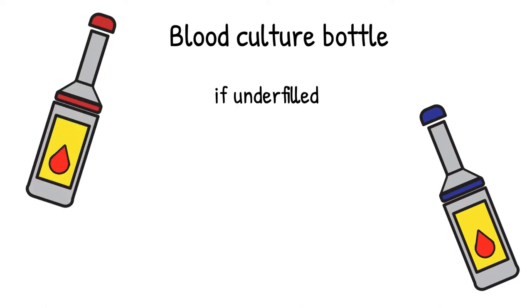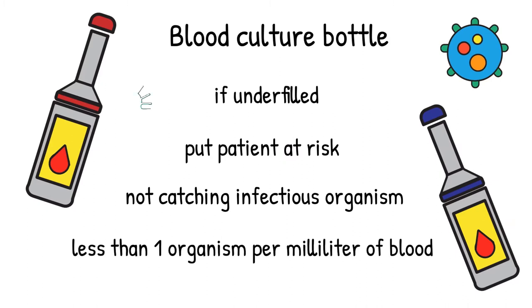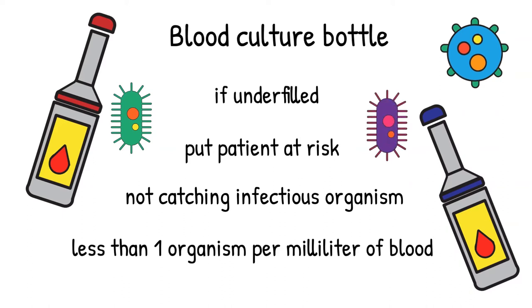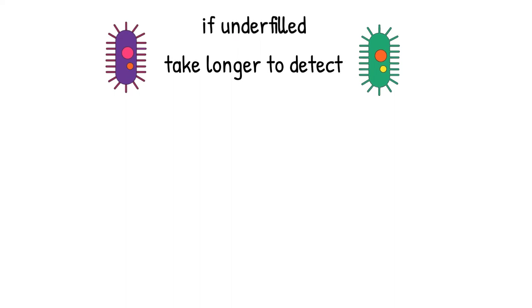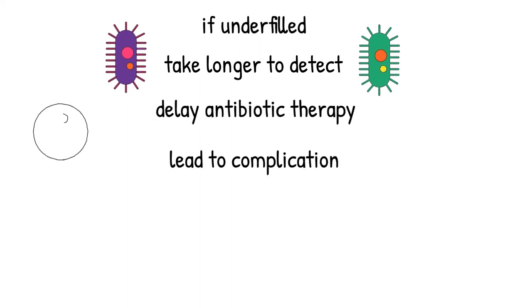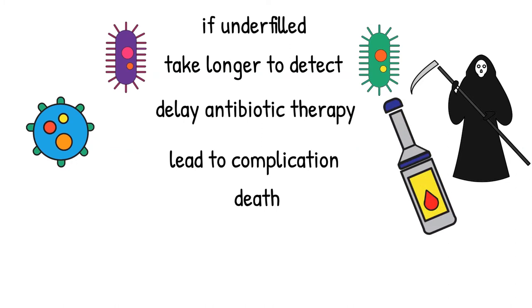When the blood culture is underfilled, you are putting the patient at risk because of not having a good enough sample. The organism that causes septicemia can be detected as low as one organism per milliliter of blood. But if you did not collect enough blood, you may miss the organism, especially at the beginning of the infection phase when the number of bacteria is still low. When blood culture specimens are short-sampled, the bacteria causing complications may take longer to detect, delay antibiotic therapy, and lead to complications, including death. The more blood collected for blood culture, the better chance of harvesting the causative organisms of bacteremia.